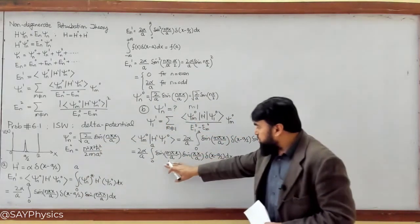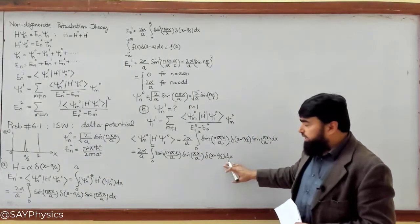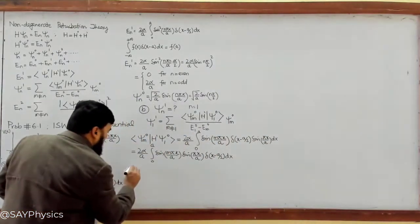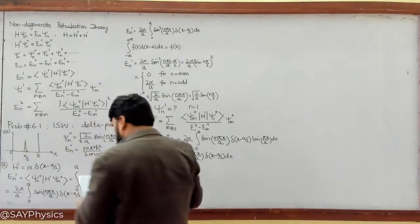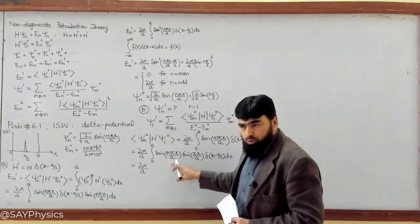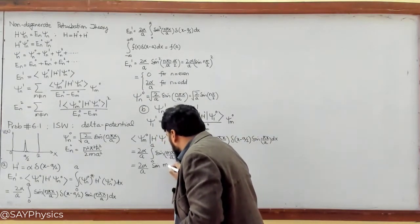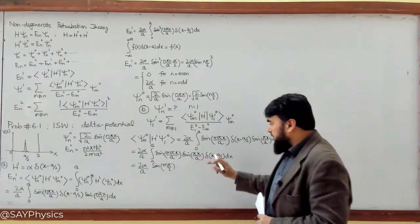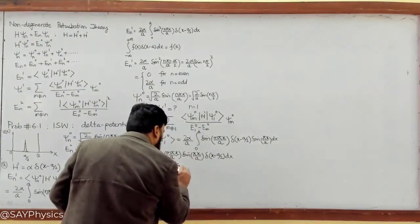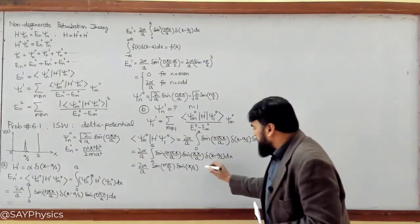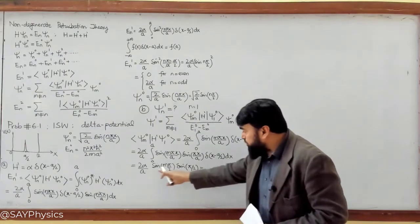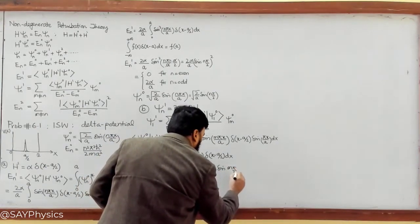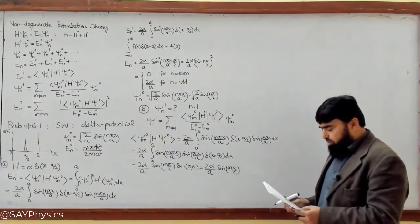Applying the delta function sets x = a/2. At x = a/2, the result is (2α/a) · sin(mπ/2) · sin(π/2). Since sin(π/2) = 1, this simplifies to (2α/a) · sin(mπ/2). This is the value of the numerator matrix element ⟨ψ_m⁰|H'|ψ₁⁰⟩.